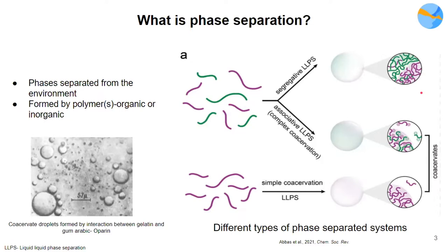They don't form coacervates or droplets, but if these polymers are oppositely charged, they can associate with themselves and form complex coacervates, as you can see in this image. Interestingly, if a single polymer is involved, interactions within itself or with others of the same type can form simple coacervates, as you can see here.